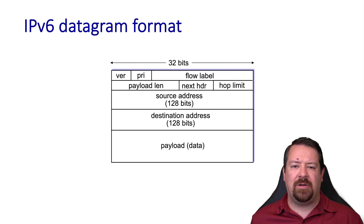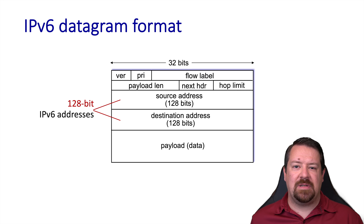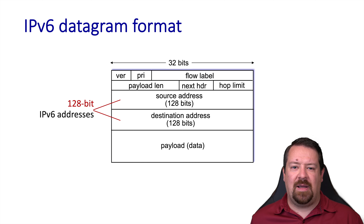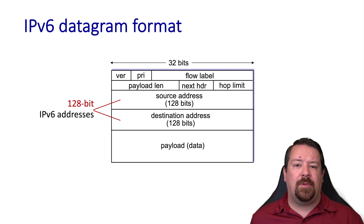Here's our IPv6 header. The number one thing we notice is these enormous 128-bit addresses — four times as many bits for each address — giving us room for unpronounceable numbers of IP addresses, as opposed to the 4 billion address limitation that IPv4 has.